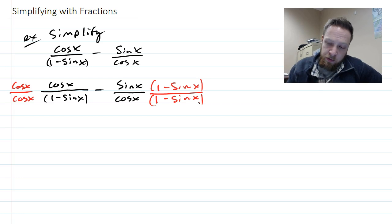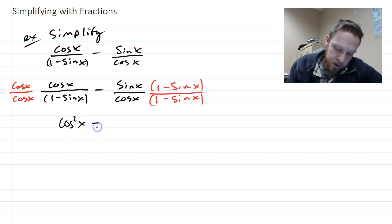So the top here is cosine times cosine is cosine squared x minus, and I'm not going to distribute this sine x yet. I'm just going to write it as a fuller expression like that, undistributed.